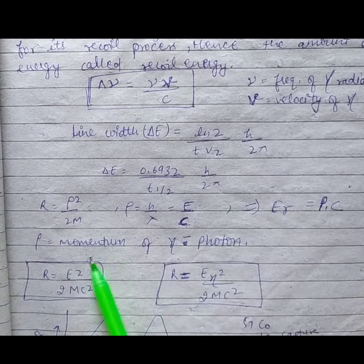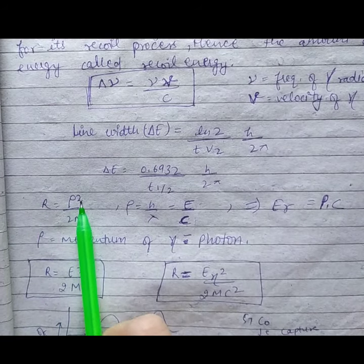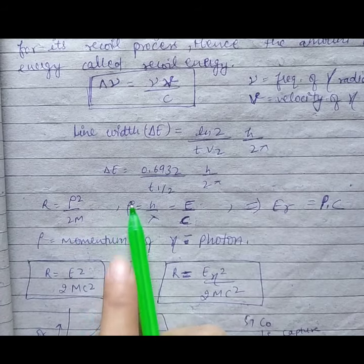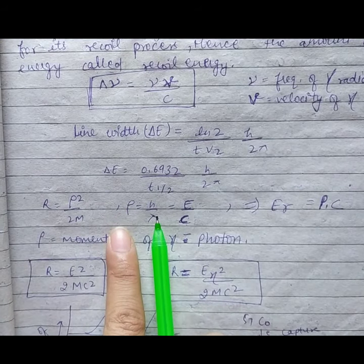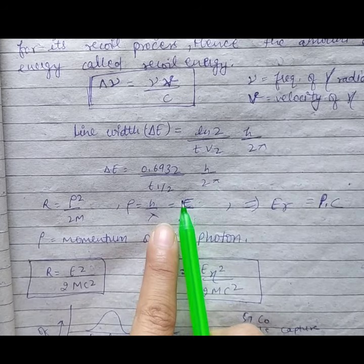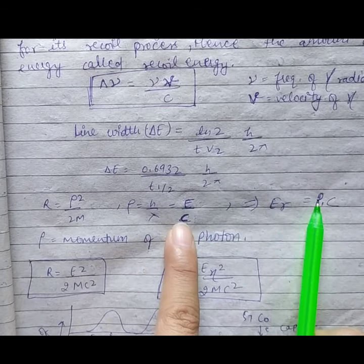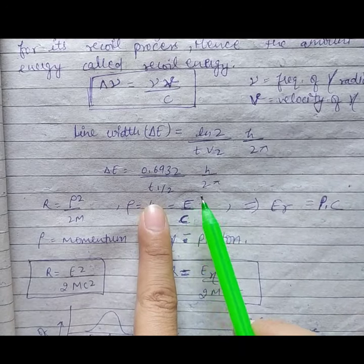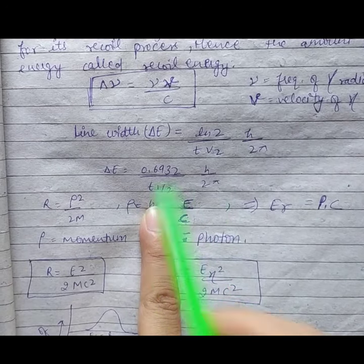How will we simplify this further? R equals rho square by 2m. Rho, we all know, equals H by lambda equals E by C. So E equals rho dot C. Here you will see E equals rho into C.